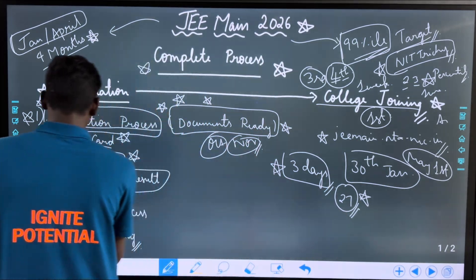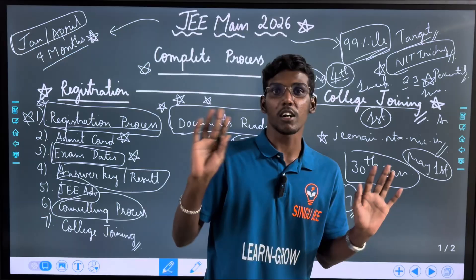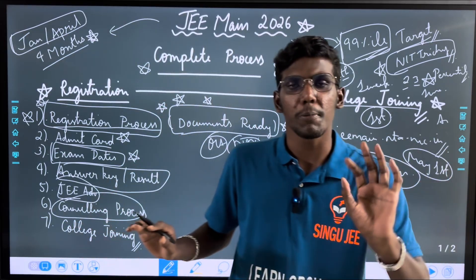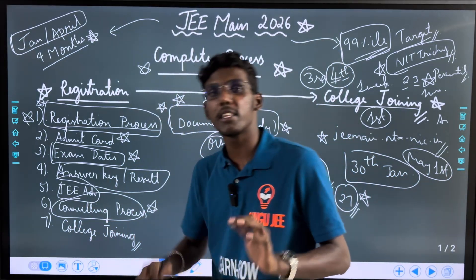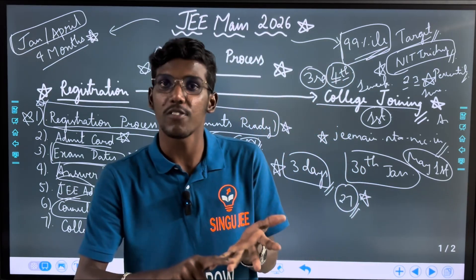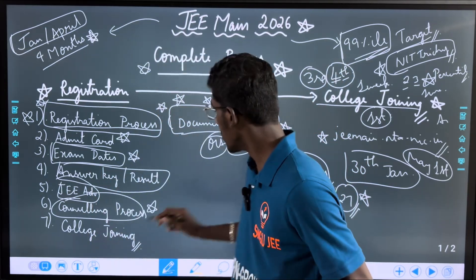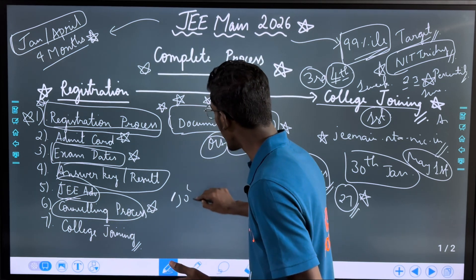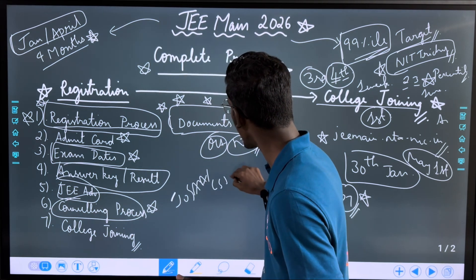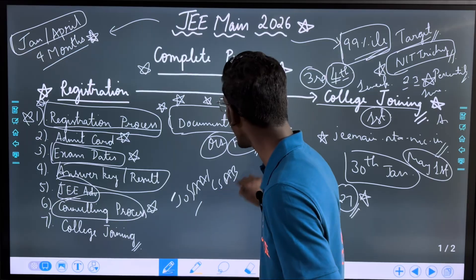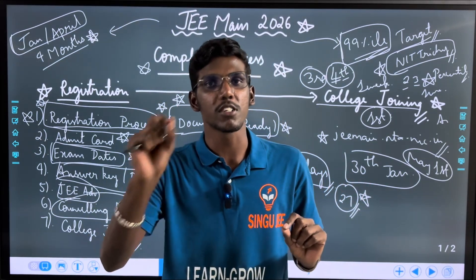June 1 started — the first week of the range that we started — the counseling process has started. The counseling process is the main thing — you are JEE, you are JEE Advanced ranking, to your seat allocation process. JOSAA and CSAB. If you look at the YouTube channel — JOSAA and CSAB — you don't have to do anything in 2016.